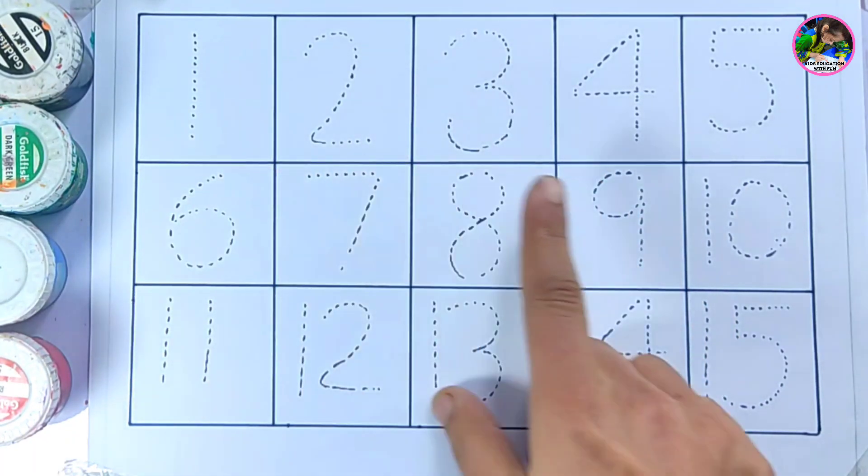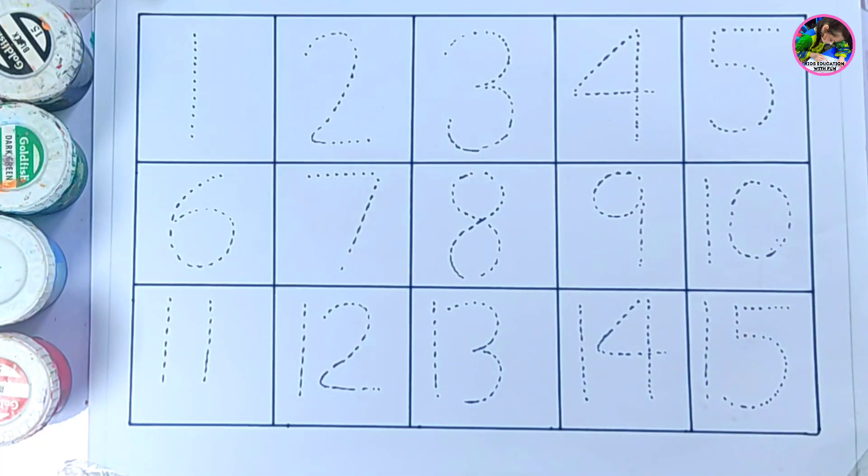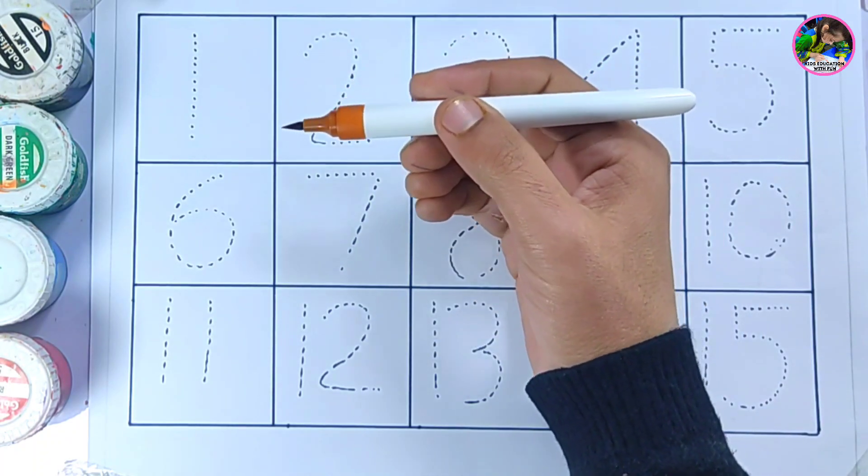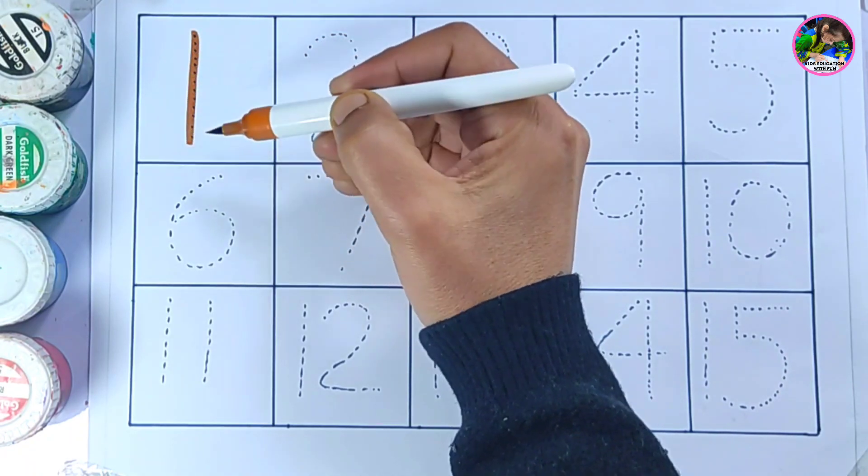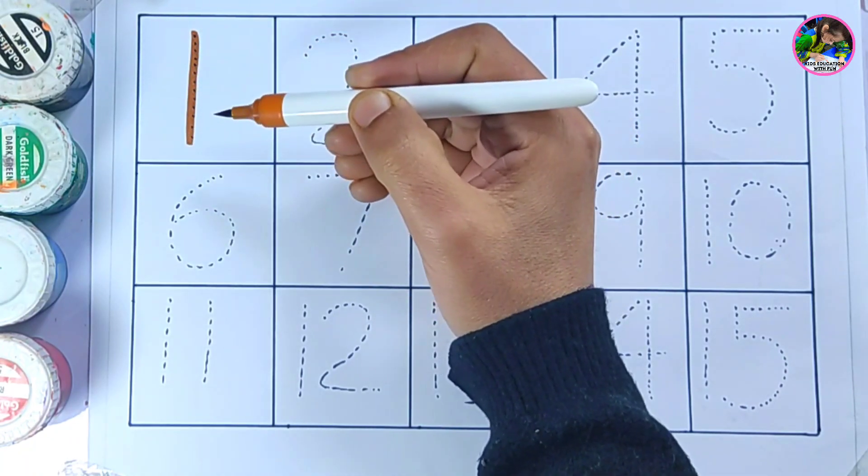Let's start tracing numbers. This is brown color. 1, number 1.